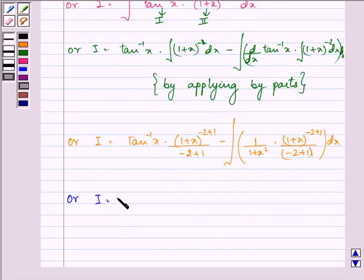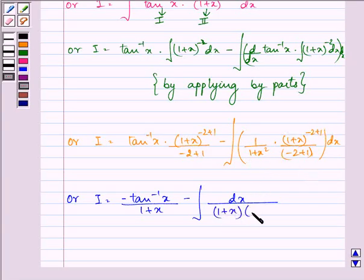Further I is equal to tan inverse x having minus sign upon 1 plus x minus integral dx upon this whole function will be 1 plus x and we have 1 plus x square already in the denominator.